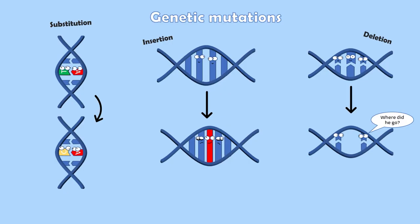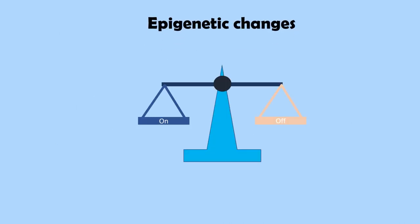While genetic mutations are commonly associated with causing cancer, there is another key player in cancer's rapid development and proliferation – epigenetic changes.